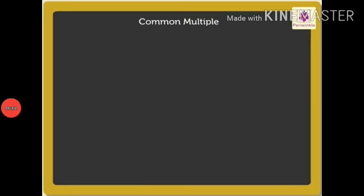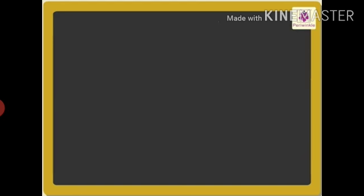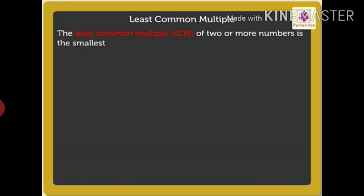Hello students, today we will learn about LCM, which means least common multiple. Let's start. When two or more numbers have the same numbers as their multiples, those multiples are said to be common multiples. Now let us see what we mean by least common multiple. The least common multiple of two or more numbers is the smallest number that is a multiple of those numbers.